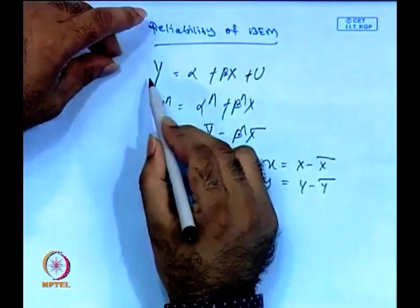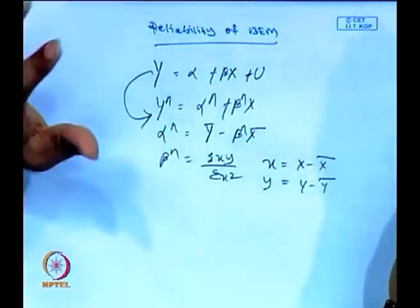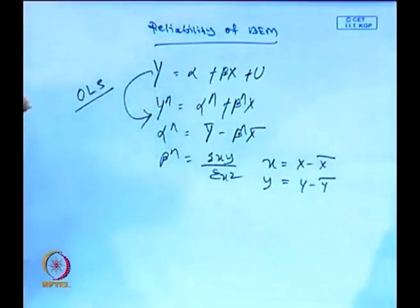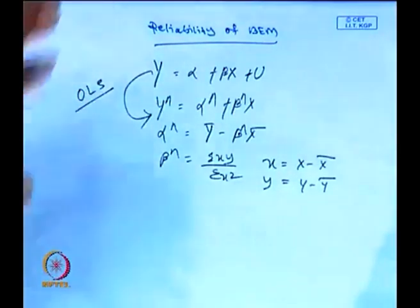In moving from the true model to the estimated model ŷ = α̂ + β̂x, we applied the OLS technique. There are several techniques: ordinary least squares, generalized least squares, weighted least squares, and maximum likelihood estimator. We start with OLS because it is very simple and easy to apply. We subsequently move to GLS and MLE where some problems are very difficult to handle through OLS.